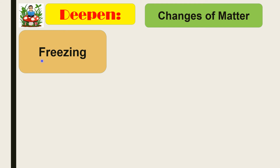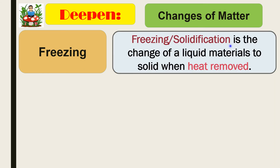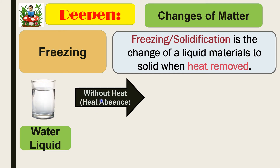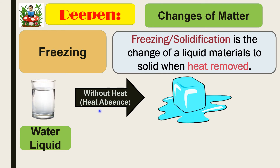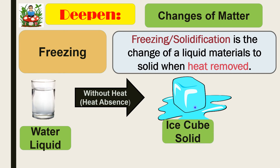Next is freezing. Freezing, or solidification, is the change of liquid material to solid when heat is removed. For example, a glass of water without heat — if we put the glass of water inside the refrigerator, which has no heat, it will turn into ice cubes, which is solid.